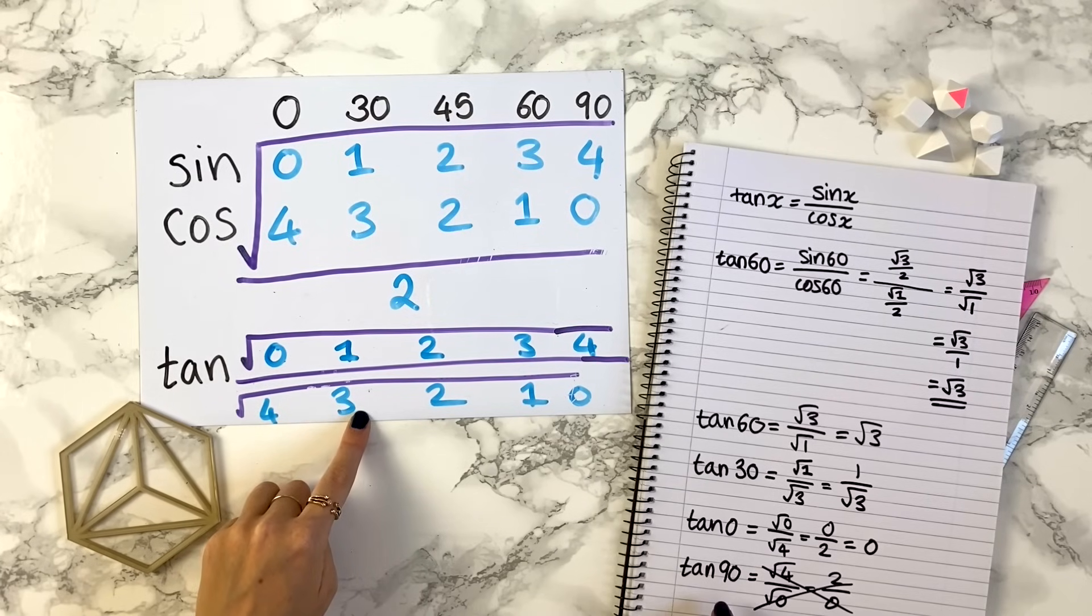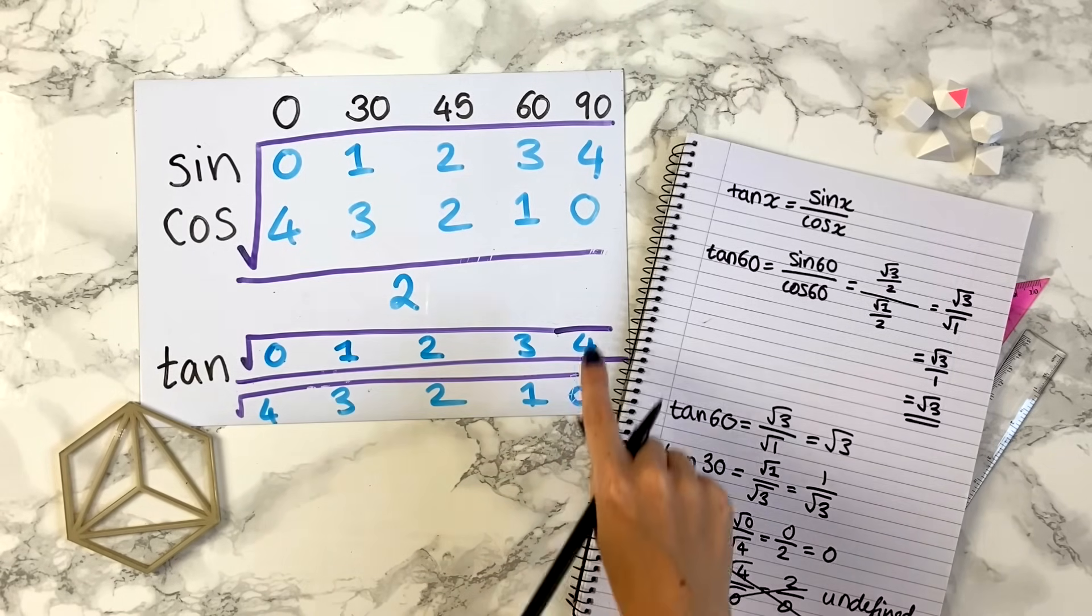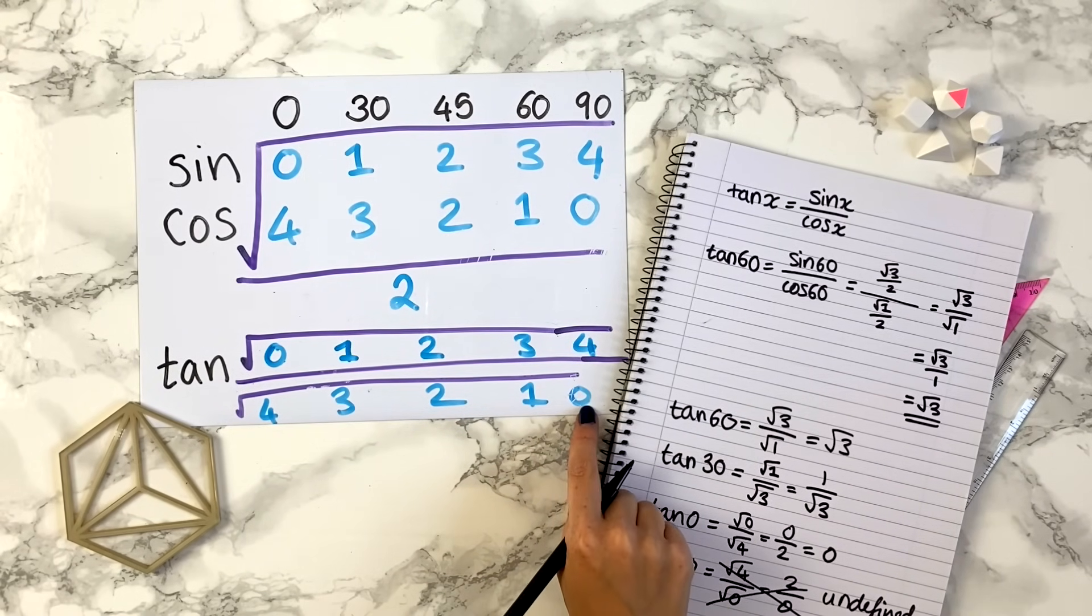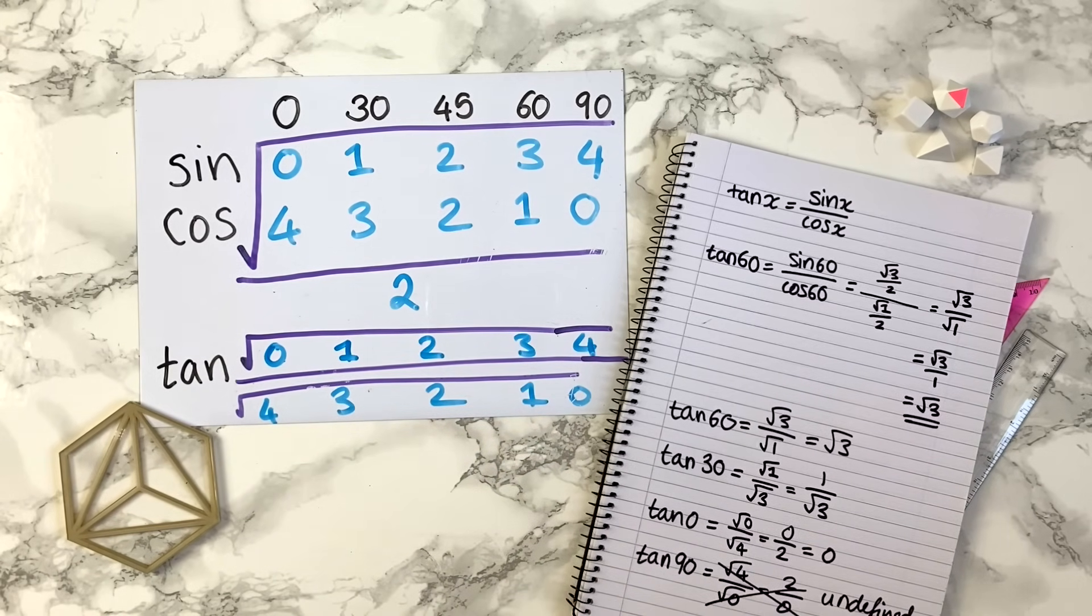But in fact, tan of 90 is undefined. So because this diagram here, tan of 90 tells you to divide by 0, you know straight away that's a problem, and so that tells you that tan of 90 is undefined.